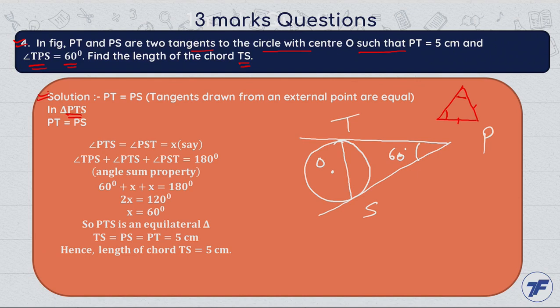That is, angles opposite to equal sides in a triangle are equal. So angle PTS equals angle PST. Let both equal X. Now in triangle PTS, the sum of all interior angles equals 180 degrees. So 60 plus X plus X equals 180 degrees, giving us X equals 60 degrees.